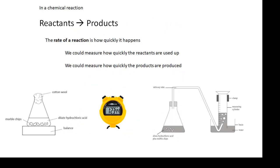In a chemical reaction, I'm going to talk about rates of reaction again. In a chemical reaction, the rate of reaction is how quickly it happens. You could measure how quickly the reactants are used up. You could measure how quickly the products are produced. So how much is produced and time. You need to know a time if you're going to work out the rate of reaction.